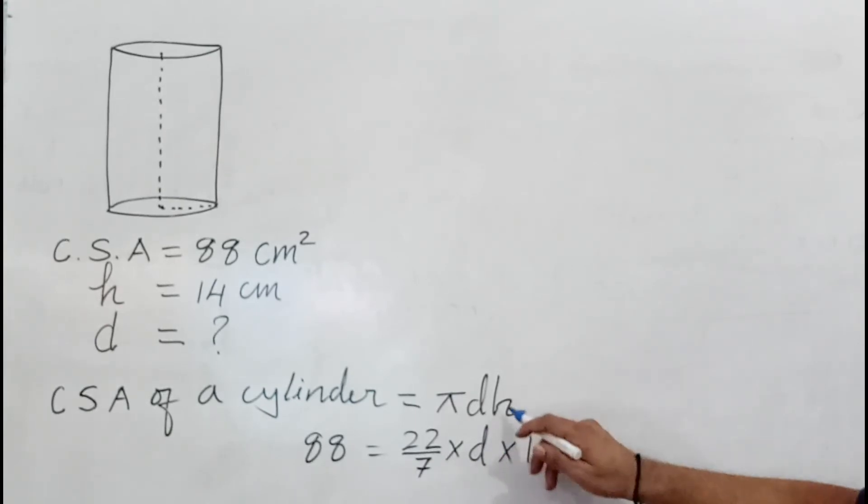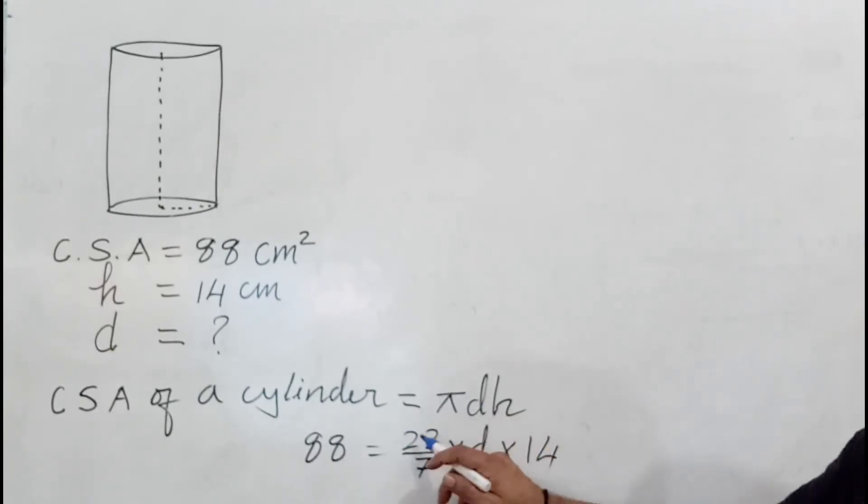When the value of pi is given in the question as 3.14, then use 3.14. If it's not given, always write 22/7. Now simplify: 7 cancels with 7, and 7 goes into 14 twice.